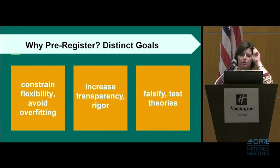Three orange text boxes appear horizontally in the middle of the slide. From left to right, the text in the boxes reads: Constrain Flexibility, Avoid Overfitting, Increase Transparency, Rigor, and Falsify/Test Theories. The OPRE Methods Meeting logo appears in the lower right-hand corner.